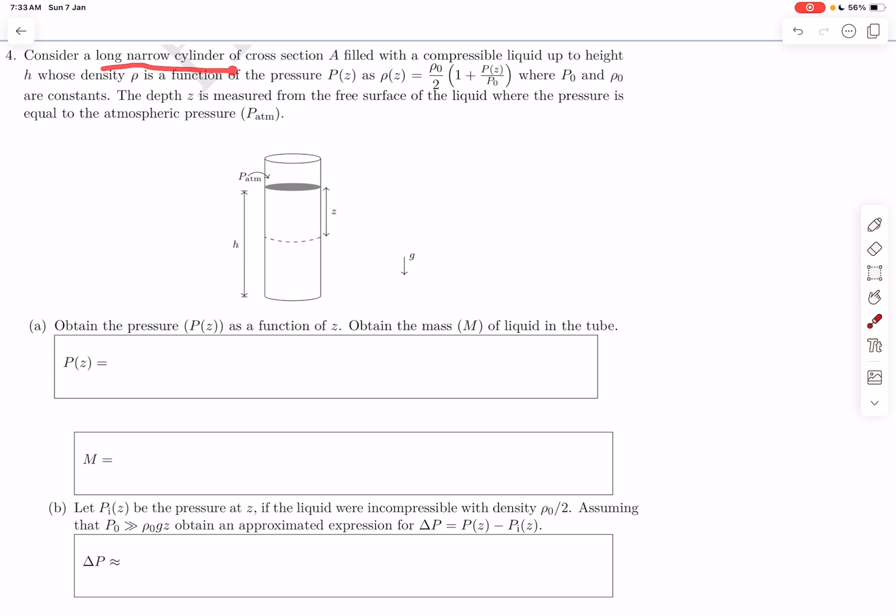We have a long narrow cylinder whose cross-section area is A, and it is filled with a compressible liquid up to a height h. The density of the fluid varies as this particular function, where p0 and ρ0 are constants and the depth z is measured from the free surface of the liquid where the pressure is equal to p_atm.